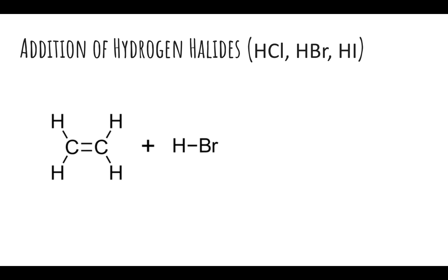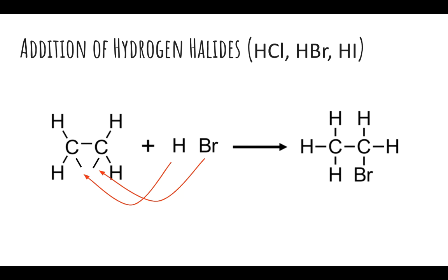The next example is the addition of hydrogen halides—hydrogen chloride, hydrogen bromide, and hydrogen iodide. This occurs in the same manner: one of the bonds in the double bond breaks, the hydrogen and the halogen break apart, hydrogen gets added to one carbon, and the halogen gets added to the other.